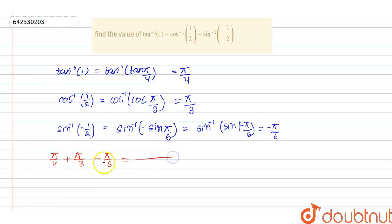when we take the LCM, this will be equals to 12. And here we have 3 pi plus 4 pi minus 2 pi. This will be equals to 4 plus 3 is 7, 7 minus 2 is 5 pi by 12. And this is the answer for this question.